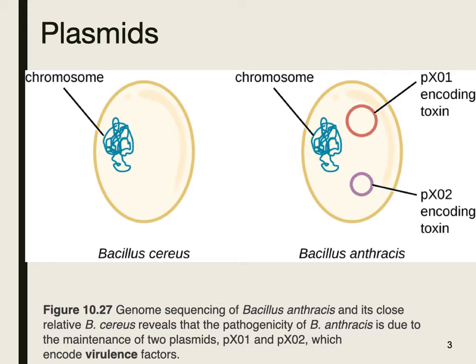Here is an example of a plasmid. Both of these bacteria have their chromosome — if we opened it up, it's almost like an elastic band coiled in on itself — with different genes essential for the bacteria to survive, including metabolism genes and genes coding for proteins important for protein synthesis. You'll notice that Bacillus anthracis has two different plasmids, which code for toxins. They could also code for other things like antibiotic resistance. Sometimes information from the plasmid can get incorporated into the chromosomes; sometimes it just stays in the plasmid.